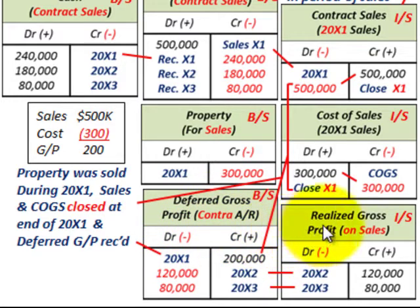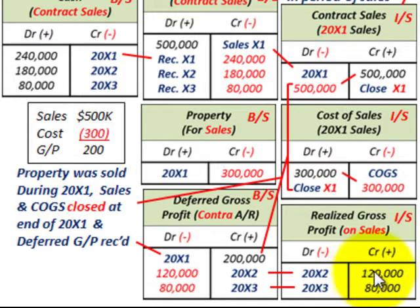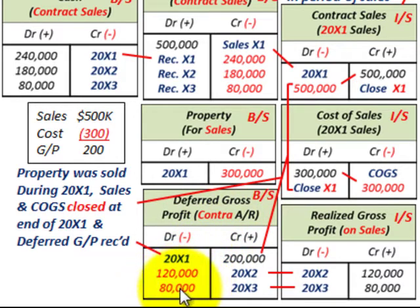Each year we recognize realized gross profit. At the end of 20x2, we debit deferred gross profit for $120,000 and credit realized gross profit on sales on our income statement for $120,000 — the cash payments received that exceeded the recovered cost. Then for year 20x3, we debit deferred gross profit for $80,000 and credit realized gross profit on our income statement for $80,000.